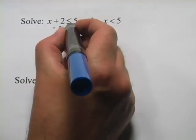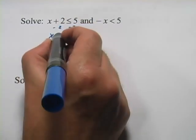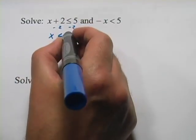This first one is pretty easy to solve. You're just going to get x alone by subtracting 2 from each side and you get x is less than or equal to 3.